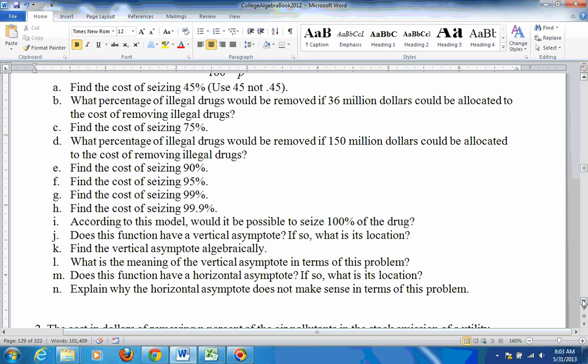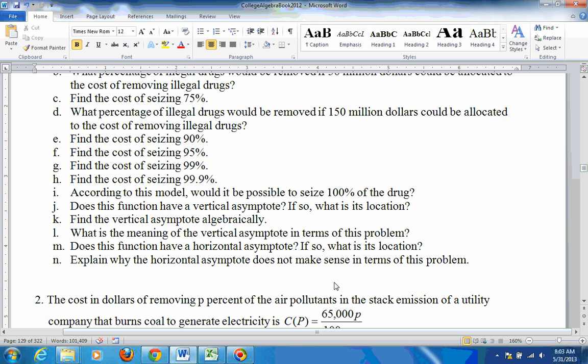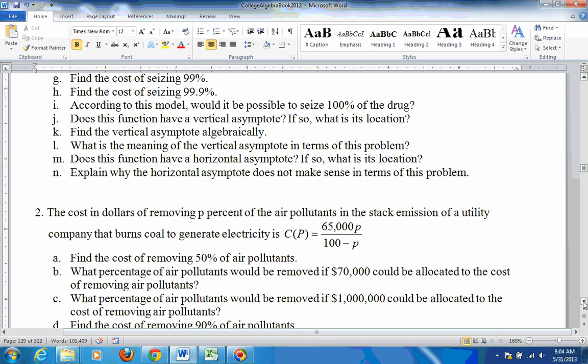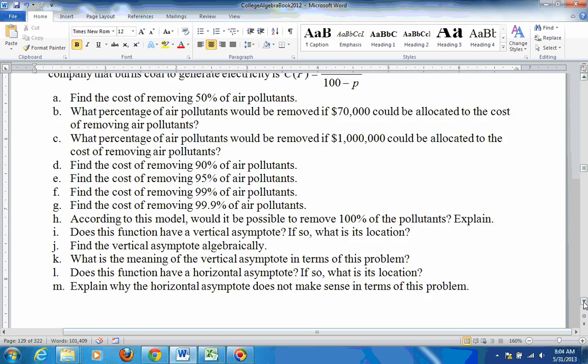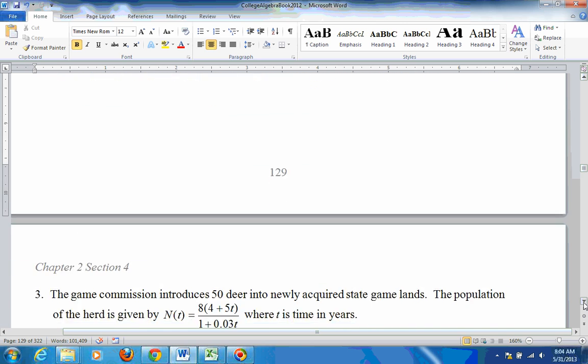Now, there's no real meaning to the horizontal asymptote. It says explain why the horizontal asymptote does not make sense on this problem. Well, the cost cannot be negative. So that doesn't make any sense. So that's problem number 1. Problem number 2 is very similar, just a different equation.